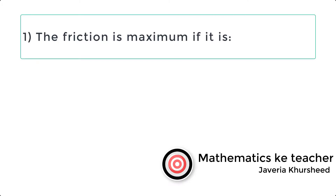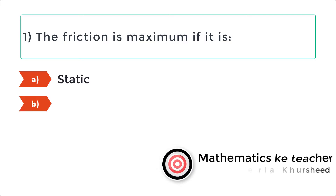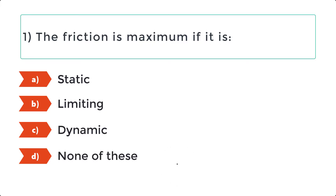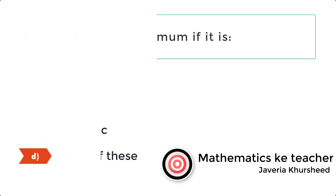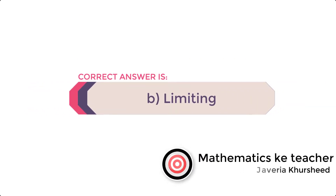Question 1: The friction is maximum if it is: A. Static, B. Limiting, C. Dynamic, D. None of these. Correct answer is B: Limiting.